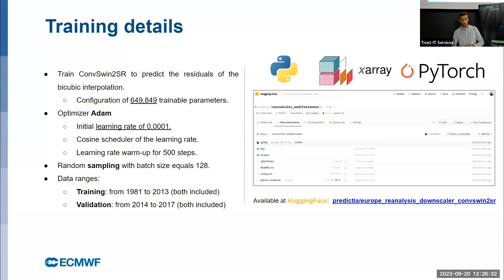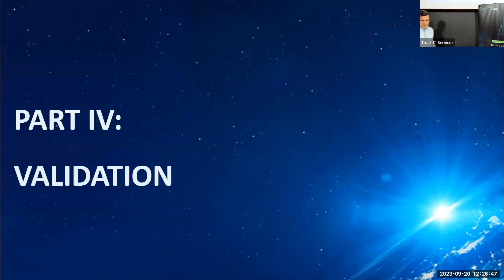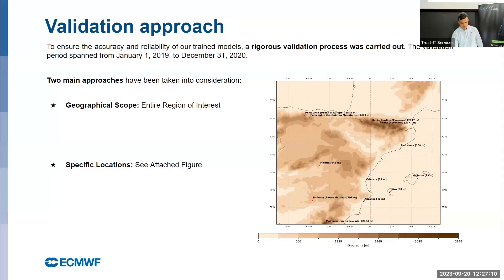The technologies we used are Python, Xarray for data processing, and PyTorch for modeling. I'll now hand over to Antonio, who will explain the validation. Good morning — I'm going to talk about the validation approach we followed. I'll focus on the convolutional Swin Transformer, which was the model that obtained the best results. We ran inference over the testing period from January 1st, 2019 to December 31st, 2020, using two main approaches: one considering the entire geographical area for spatial maps, and another taking specific locations of interest across the region.